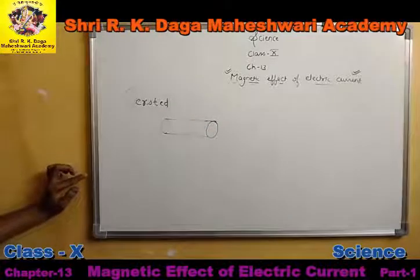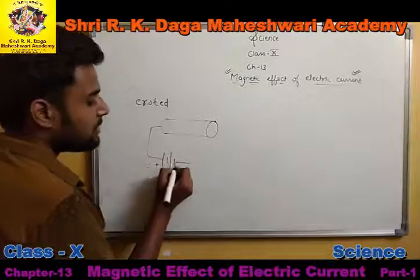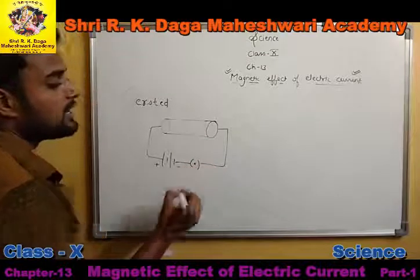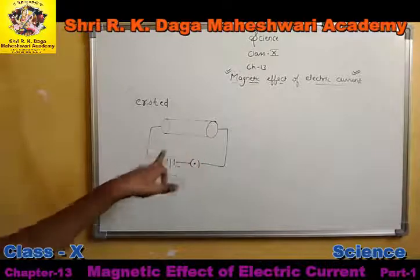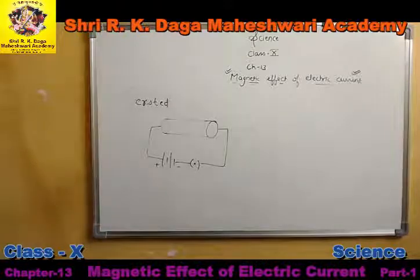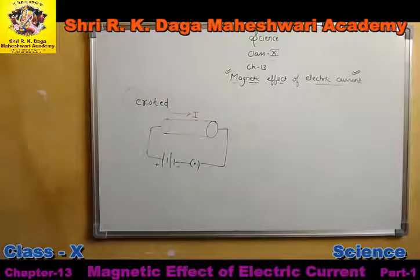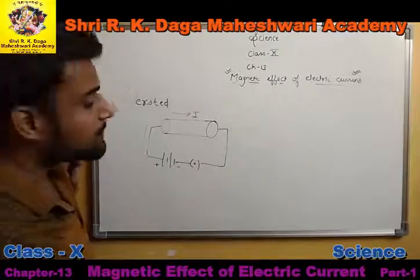What Oersted did was: he took a copper wire and connected it to a battery. This is the battery with a positive terminal and a negative terminal. When the key is closed, current flows through the wire. The current flows from the positive terminal of the battery to the negative terminal of the battery through the wire.